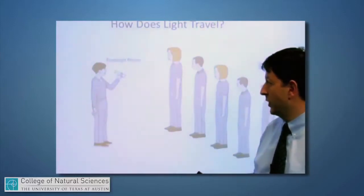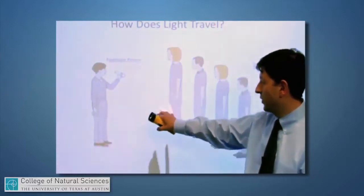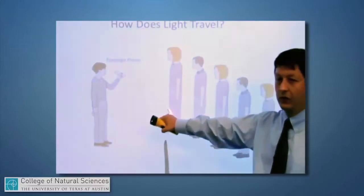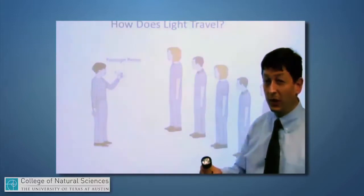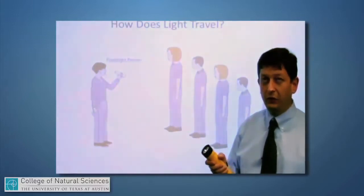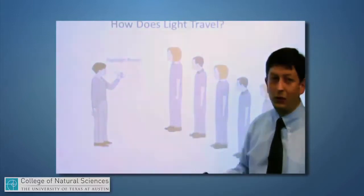Well, the light travels pretty much in a straight line, and if this young lady was shining her flashlight directly at this person, the other people standing in a row here would not see that flashlight beam. It would not glare in the other people's eyes; it would be pretty much right at one person.